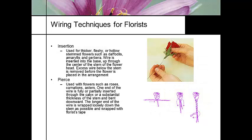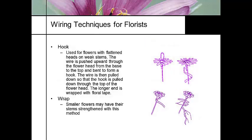One of the wiring techniques everybody should learn is how to wire a rosebud. The easiest way is to slip the wire through the calyx, bend it down, spin it, and wrap it. A hook technique is used on daisies and carnations where you actually run the wire through the stem. If you go into a major florist shop, they're doing these techniques faster than you can see.